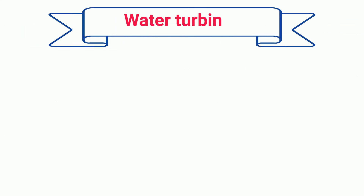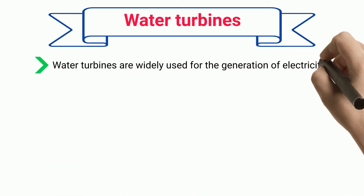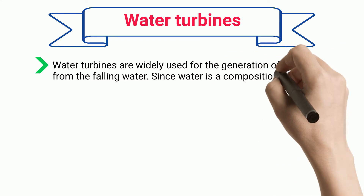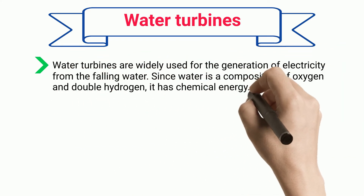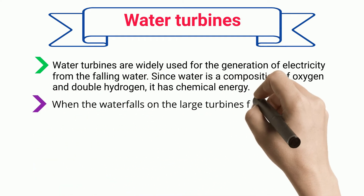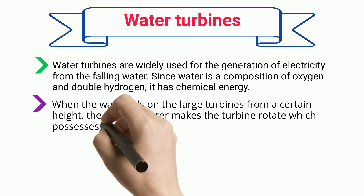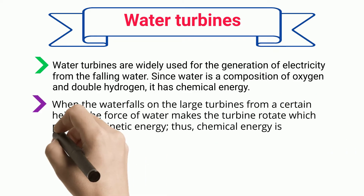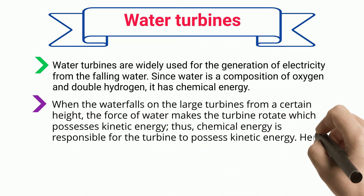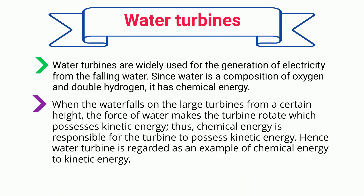Water Turbines. Water turbines are widely used for the generation of electricity from falling water. Since water is a composition of oxygen and hydrogen, it has chemical energy. When the water falls on large turbines from a certain height, the force of water makes the turbine rotate, which possesses kinetic energy. Thus, chemical energy is responsible for the turbine to possess kinetic energy, making water turbines an example of chemical energy to kinetic energy.